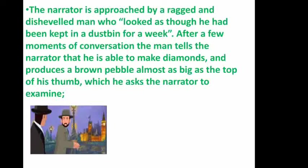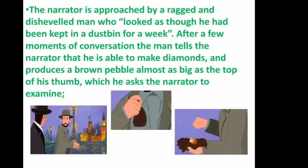Suddenly, the narrator is approached by a ragged and disheveled man who looked as though he had been kept in a dustbin for a week — very shabby. After a few moments of conversation, the man tells the narrator that he is able to make diamonds, and produces a brown pebble almost as big as the top of his thumb. By the stranger's appearance, the narrator felt he must be a poor man, and it was unbelievable that such a man made diamonds. As we say, don't judge a book by its cover — appearances are deceptive.